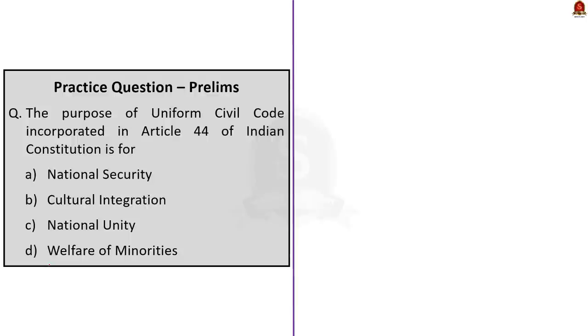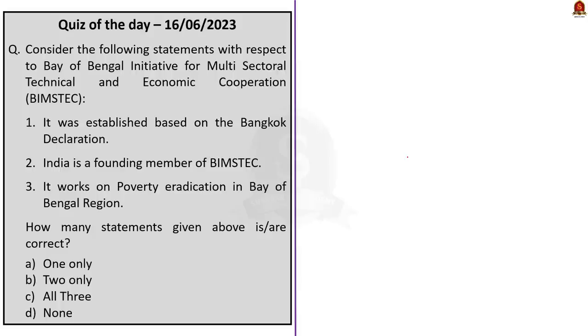Question 3. The purpose of Uniform Civil Code incorporated in Article 44 of Indian Constitution is for? The answer here is option C, National Unity. Article 44 in the Directive Principles of State Policy tells that the state shall endeavour to secure for the citizens a uniform civil code throughout the territory of India. This is incorporated to include national unity among the people. This is the quiz question. Based on the discussion we had today, you will be able to answer this question. Read the question carefully and post the answers in the comment box below.